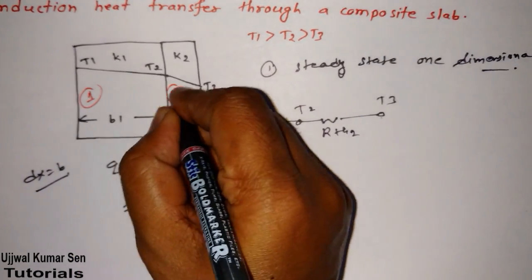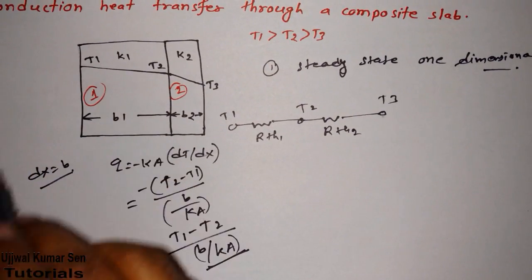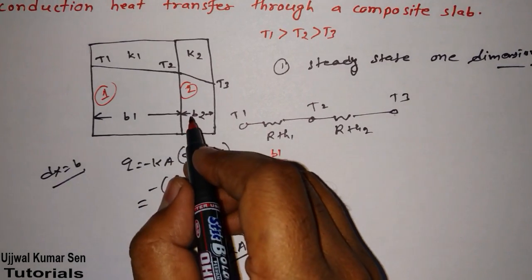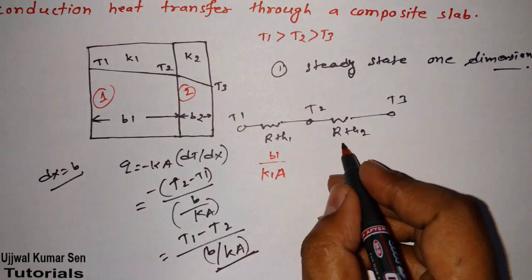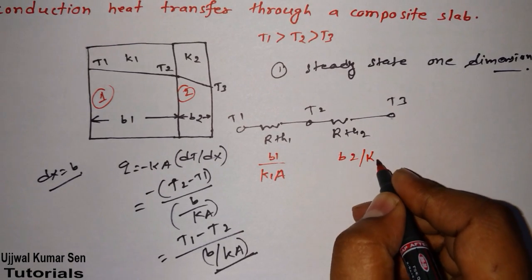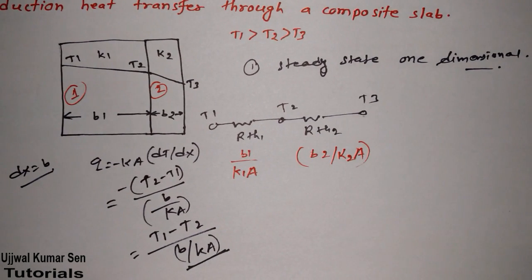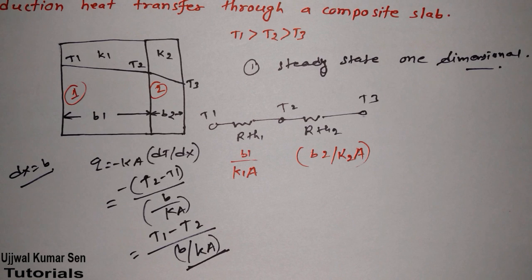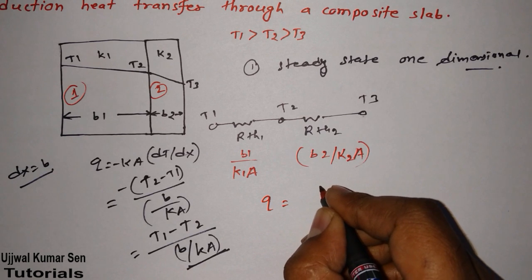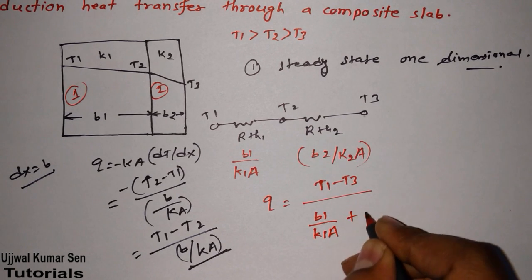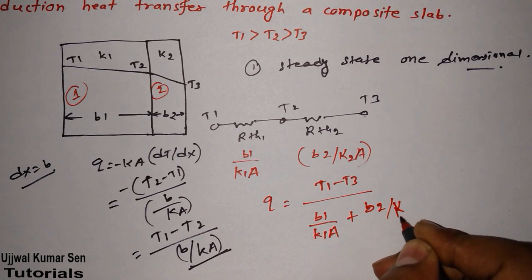For the first slab, RTH1 is equal to B1/(K1·A), and for the second slab, RTH2 is equal to B2/(K2·A). Once we get the thermal resistance for each slab, we can find the total heat transfer rate: Q equals (T1 minus T3) divided by (B1/(K1·A) plus B2/(K2·A)).